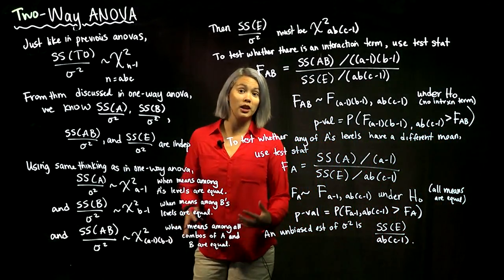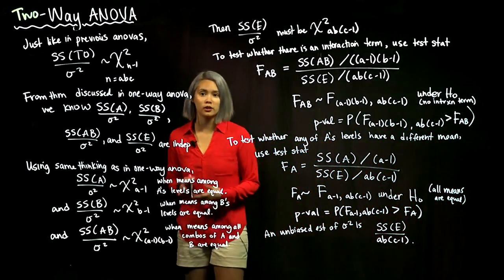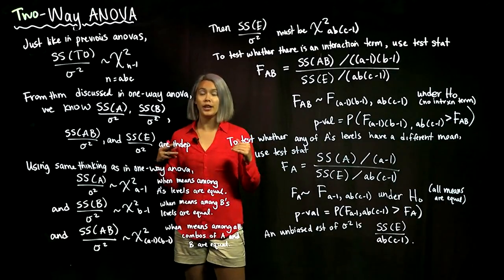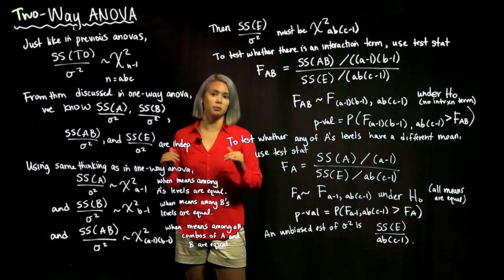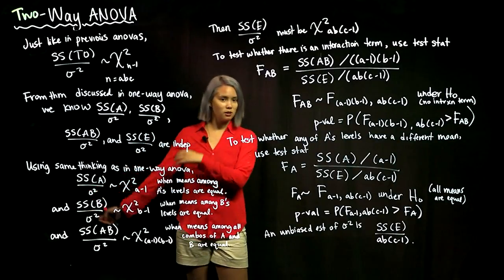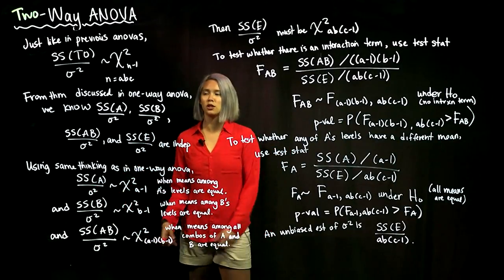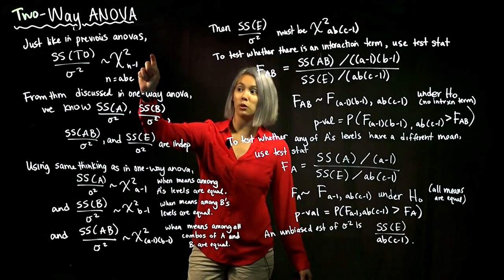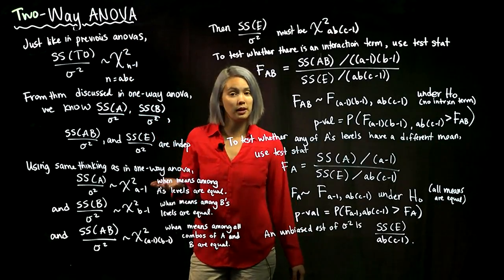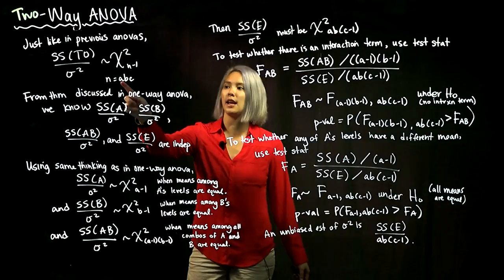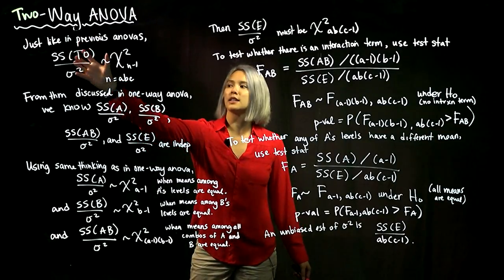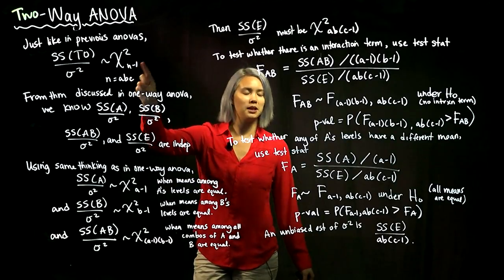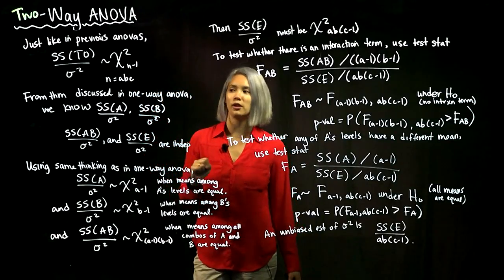Now that we have set up the notation for our two-way ANOVA with multiple observations for each combo of A and B, we can get into some of the statistical properties. Just like in all our previous ANOVA situations, the total sum of squares divided by sigma squared has a chi-squared distribution with n minus 1 degrees of freedom. Here n is a times b times c, so SS total over sigma squared has a chi-squared distribution with abc minus 1 degrees of freedom.